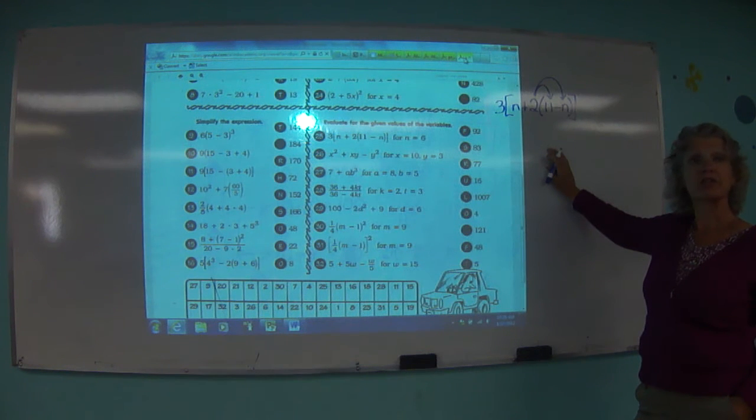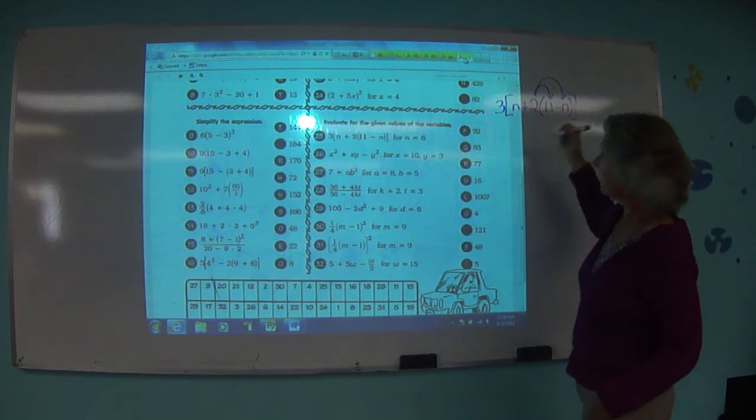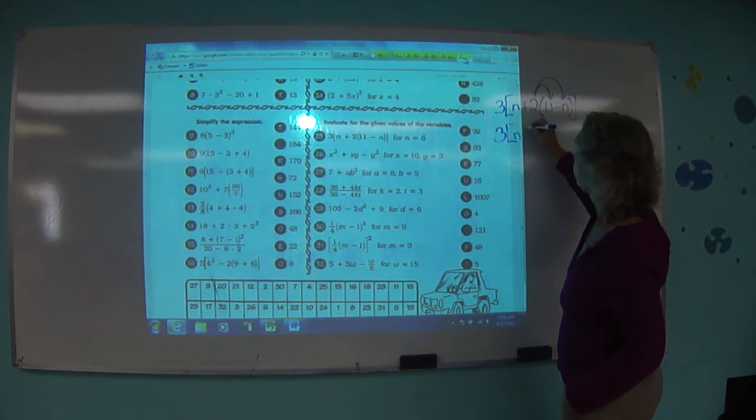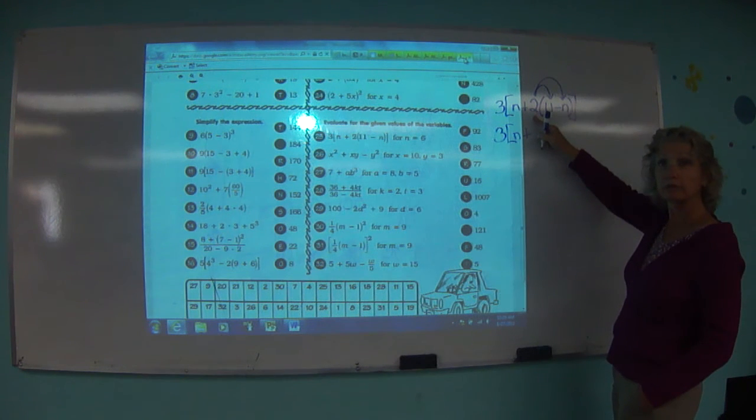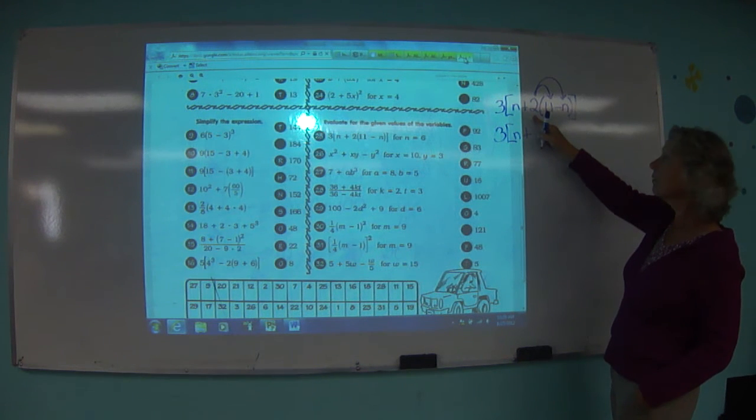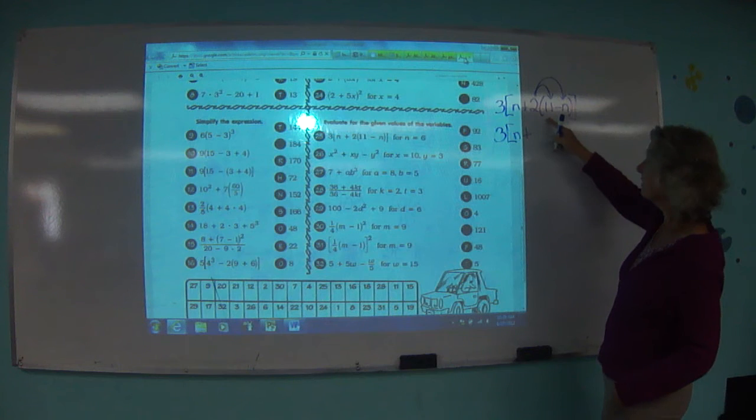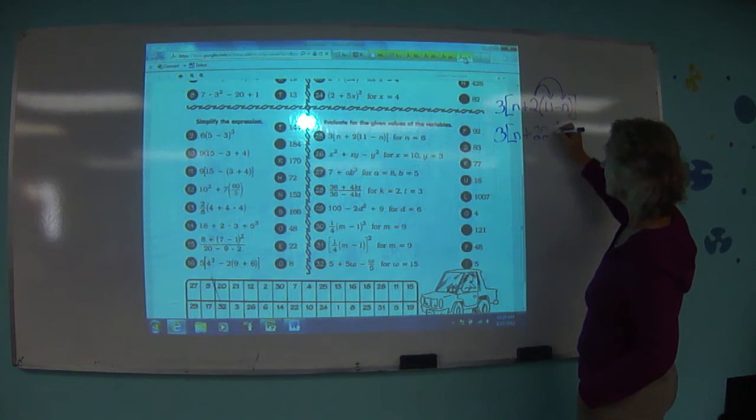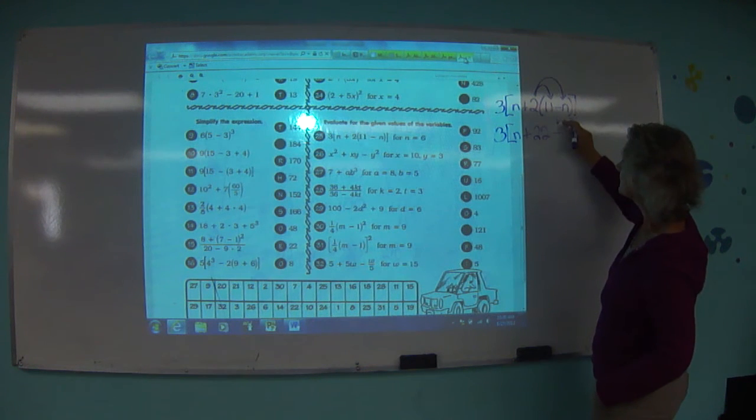You're going to do the distributive property with one of your words on one of your index cards. Okay? And I'll add it to my list. So, n plus. What do you do now? What does this mean? We're going to multiply 2 times 11. 2 times 11 is 22. Keep the operation the same, and 2 times n is 2n. There you go.